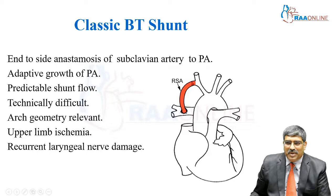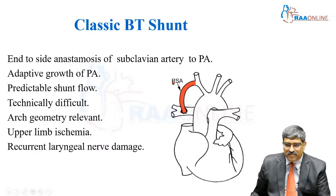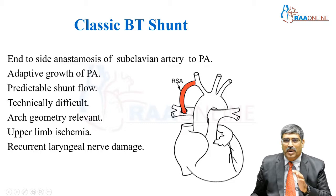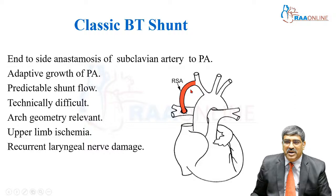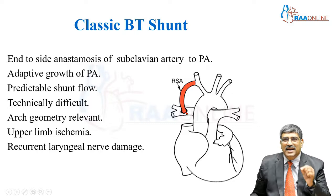What is the classic Blalock-Taussig shunt? Here, you bring the right subclavian artery to the pulmonary artery. This is the right pulmonary artery, this is the left pulmonary artery, and this is the subclavian artery. You dissect the subclavian artery and take that end and anastomose it to the pulmonary artery — an end-to-side anastomosis of the subclavian to the pulmonary artery. By doing this, there is adaptive growth of the PA and regulated flow of subclavian blood into the pulmonary artery.